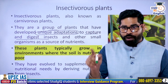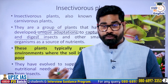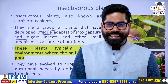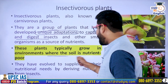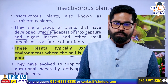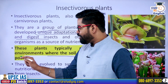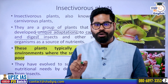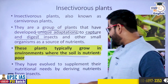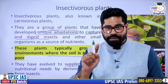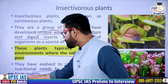Why do they need this? Because the soil where they are growing has poor nutrient content — the nutrient in the soil is low. The nutrient in the soil is poor, and thus for meeting their nutrient requirement, they are depending on insects and other small organisms for their food. So they have evolved — you can see this is an adaptation where they supplement their nutritional needs by deriving nutrients from insects.